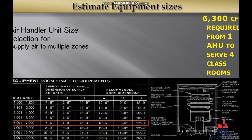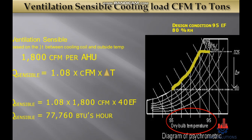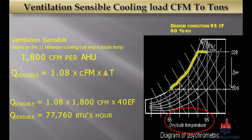The AHU selection table is shown with capacities. To calculate the chiller or refrigeration unit size, we need to perform heat load calculations, which require sensible cooling load and latent cooling load of ventilation, as well as space cooling load. To convert sensible cooling load CFM to tons of refrigeration, we use a ventilation cooling load of 1,800 CFM and a factor value of 1.08. Delta T is room temperature minus desired temperature — 40°F in this example. Multiplying 1.08 by 1,800 by 40 gives 77,760 BTU per hour for sensible ventilation heat.